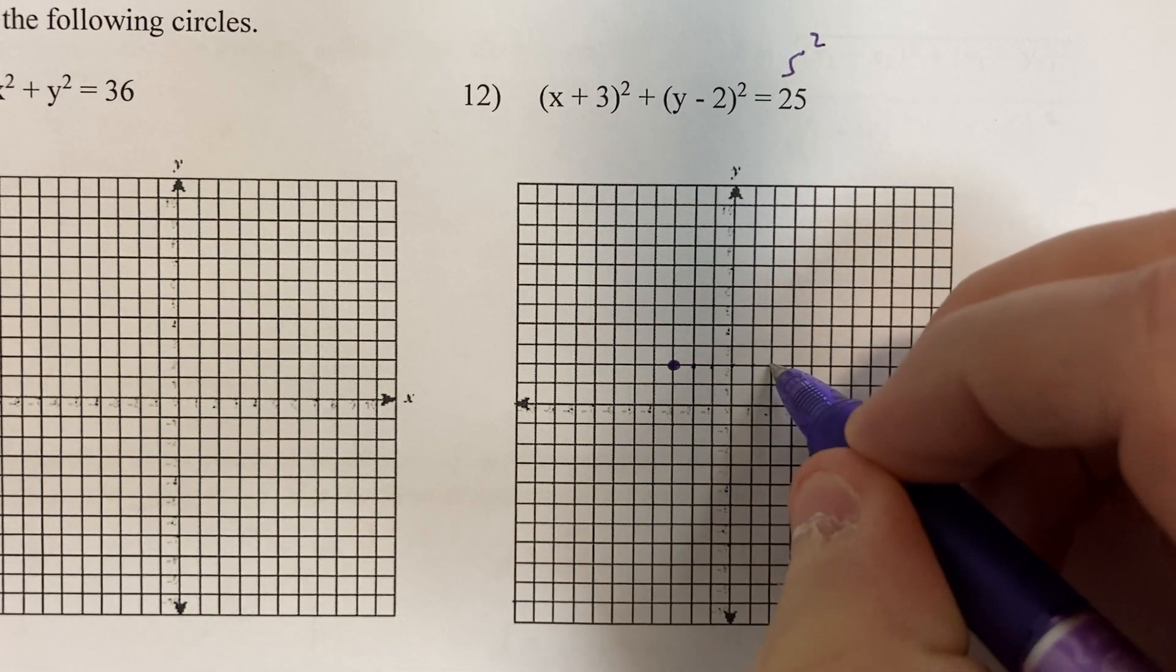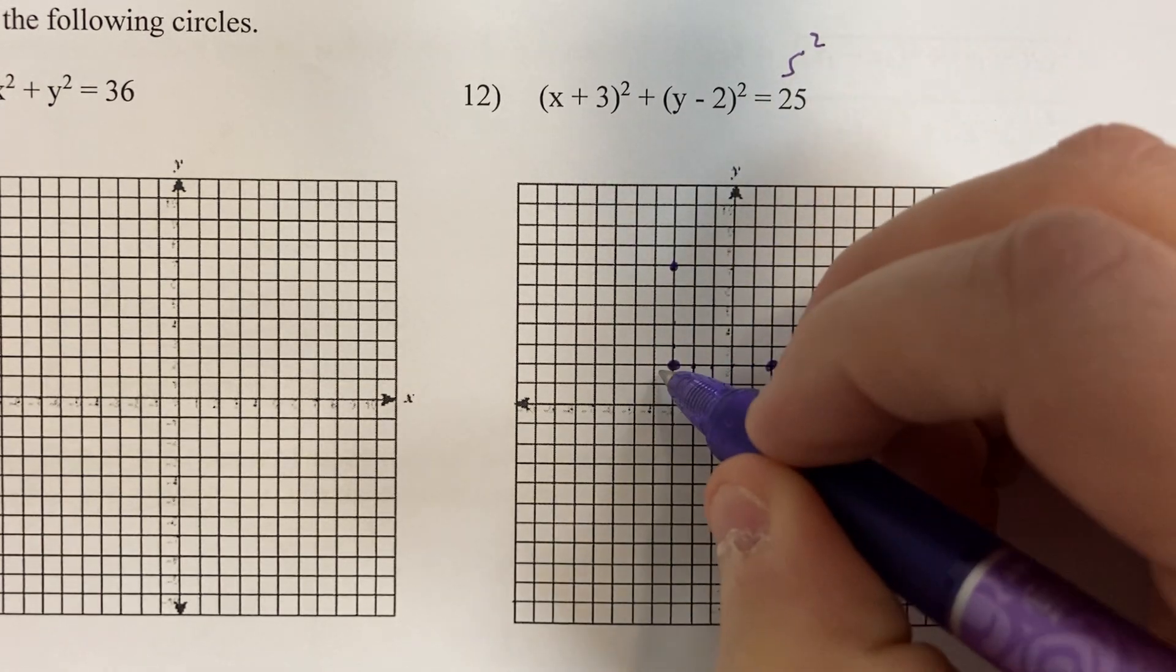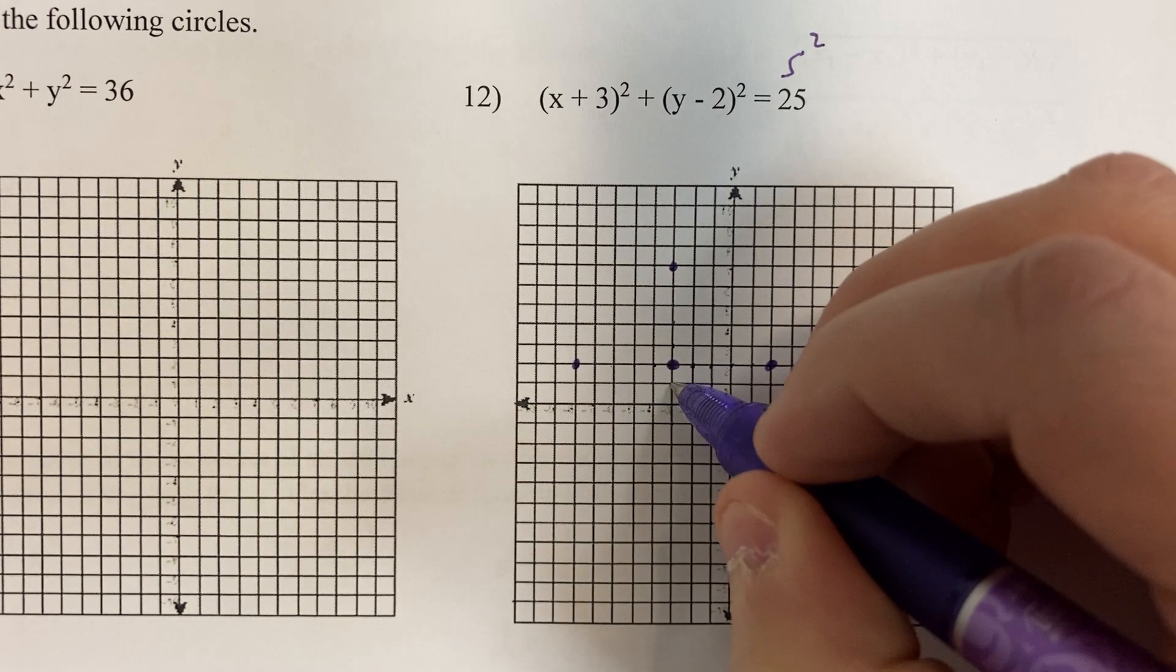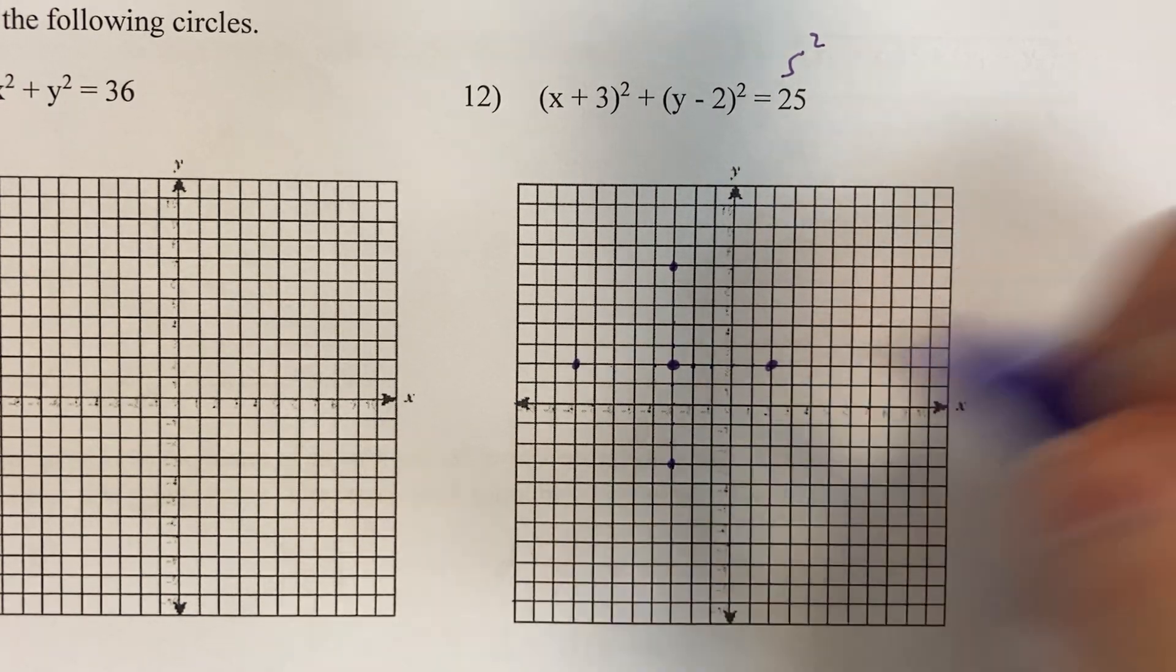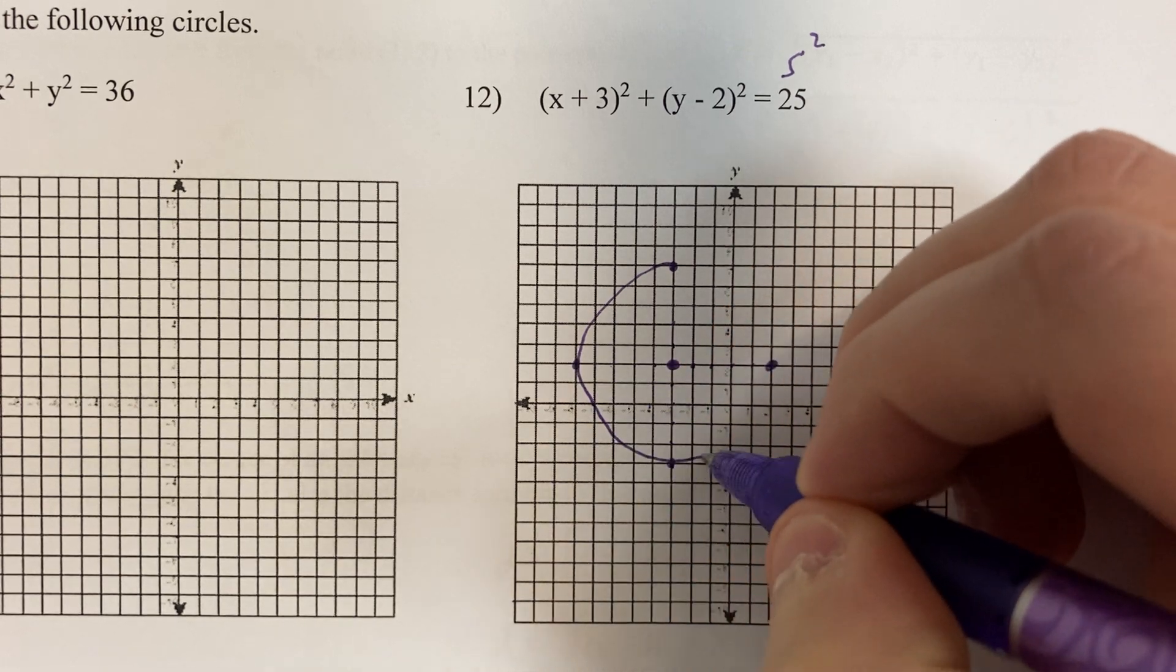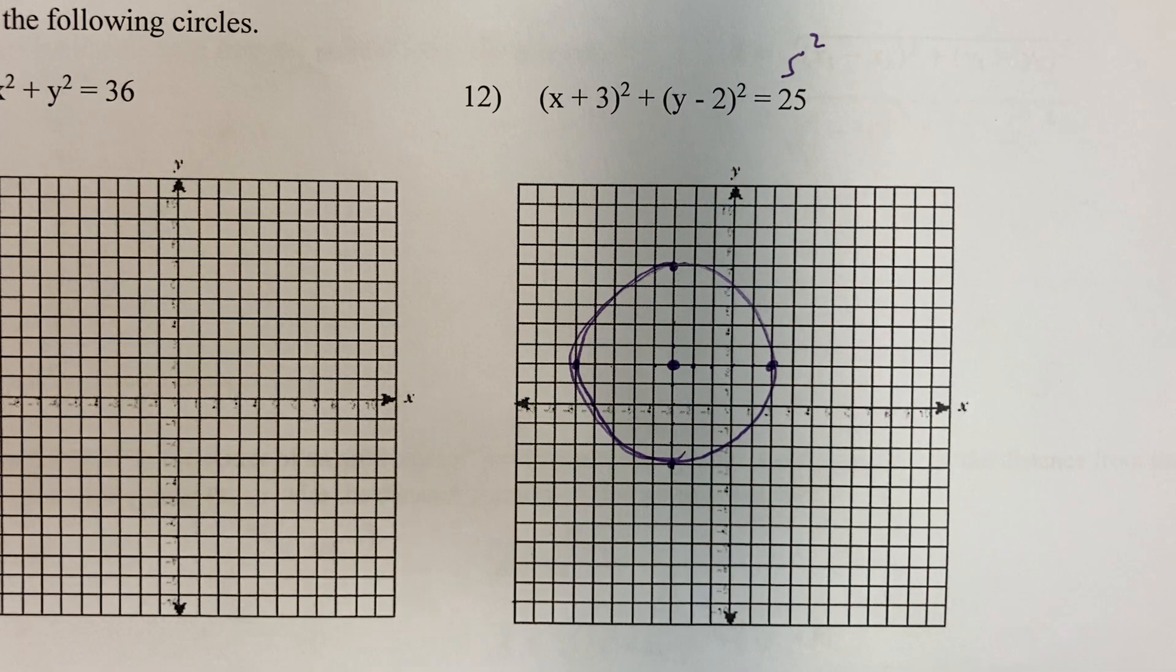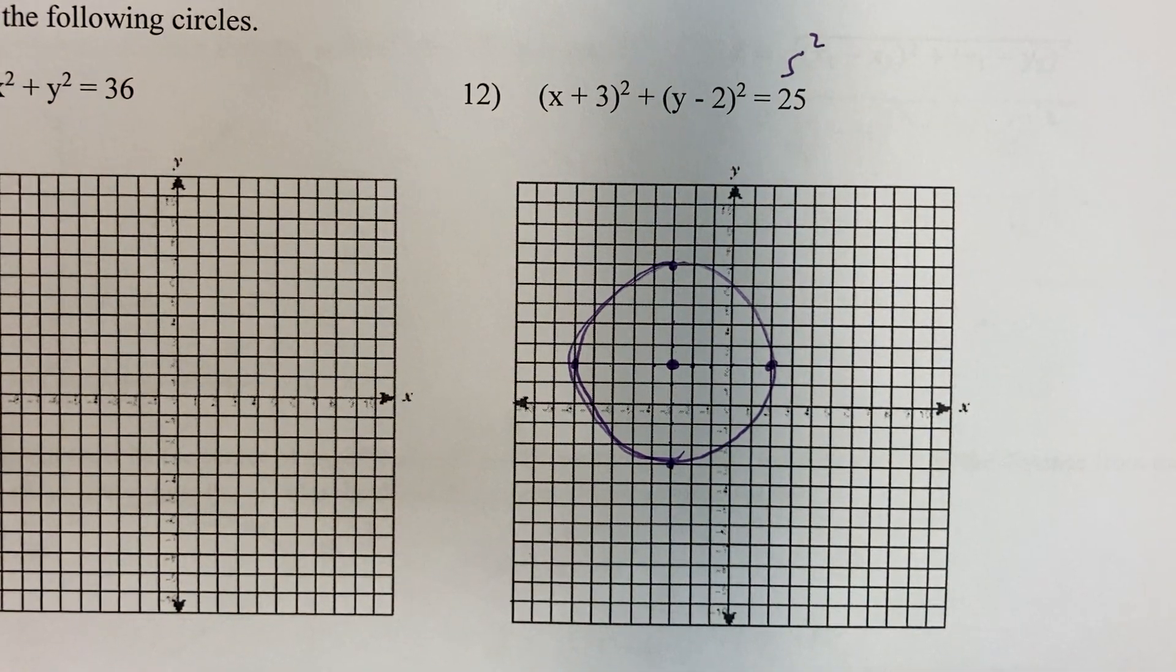1, 2, 3... go over 5, up 5, over 5, down 5. And try my best to make a circle.